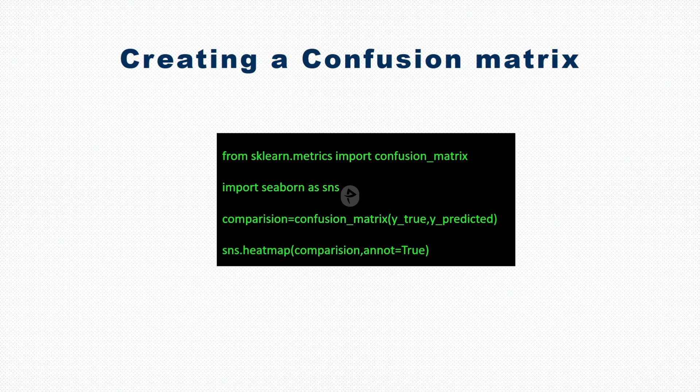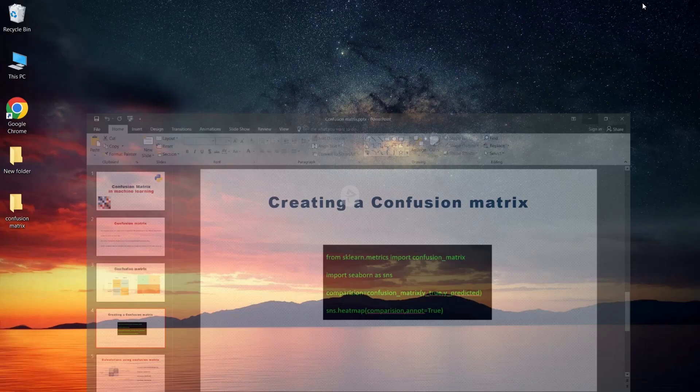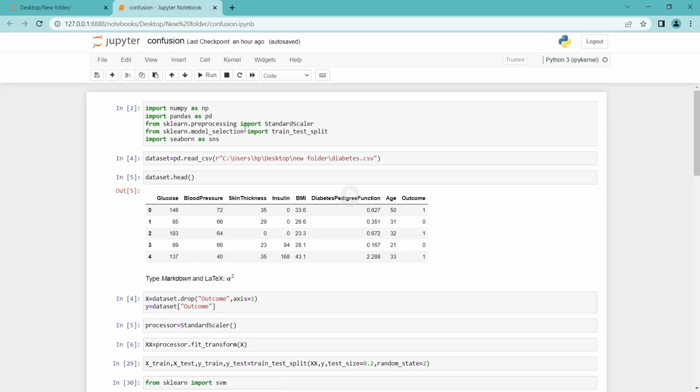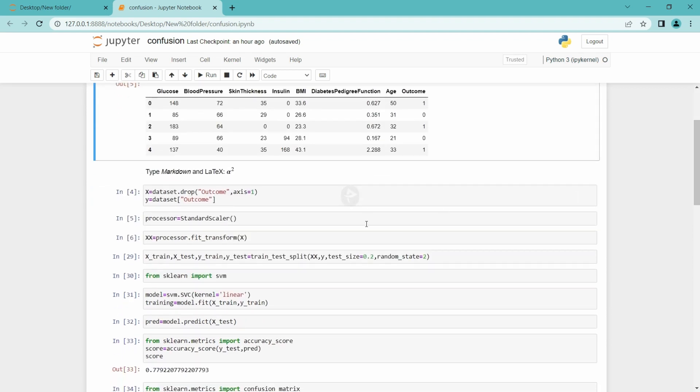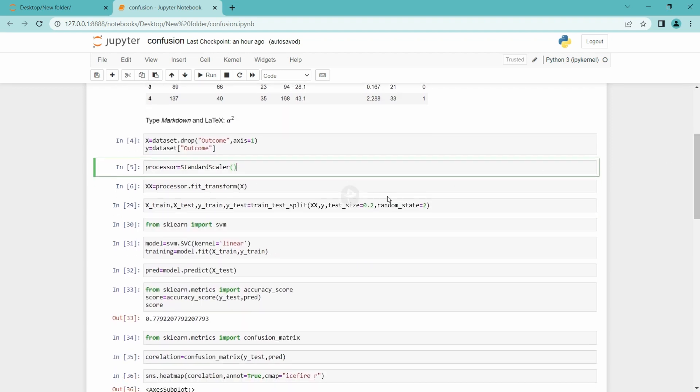Let me show you an example of how we can compare models based on this confusion matrix. Let me open my Jupyter notebook. Here I have imported all the libraries and the dataset. It is a diabetes dataset. You can see there are various features here. Based on these features there is an outcome either 1 or 0. 1 represents diabetes and 0 represents no diabetes. I have split x and y, preprocessed the x, fit transformed, and then split for testing and training.